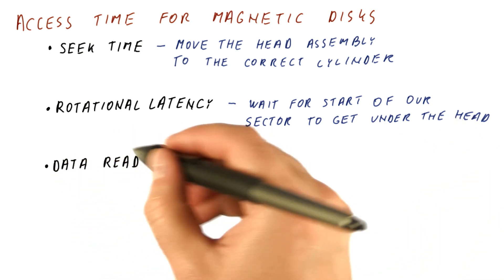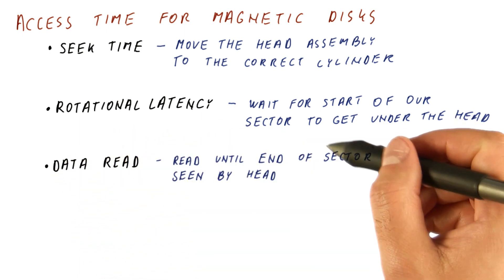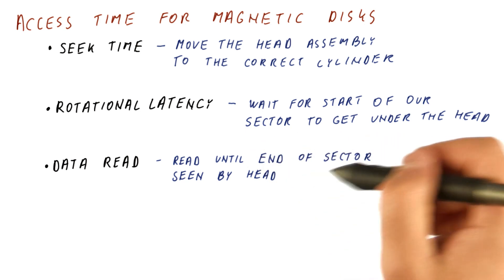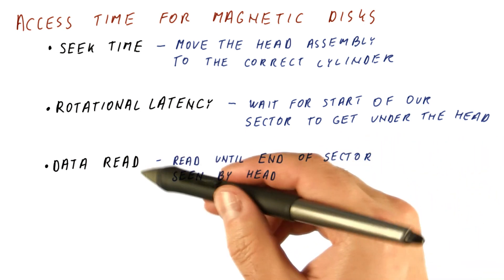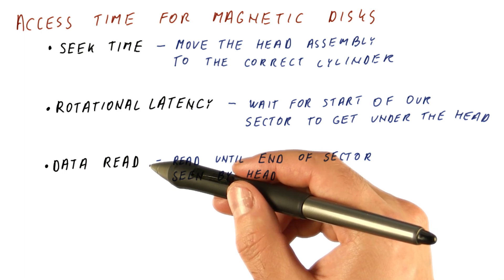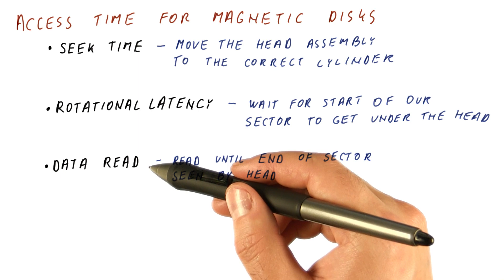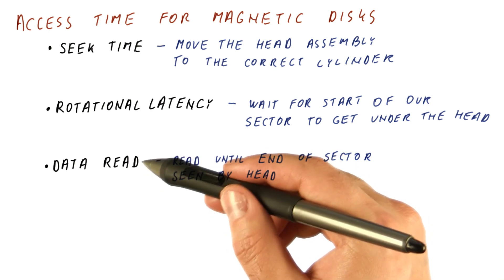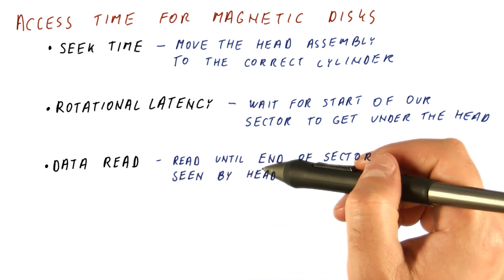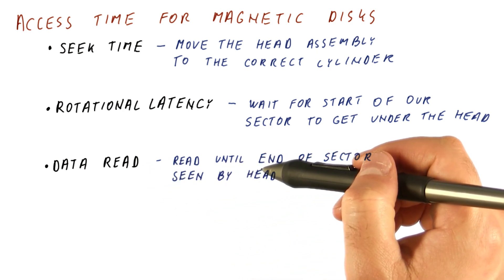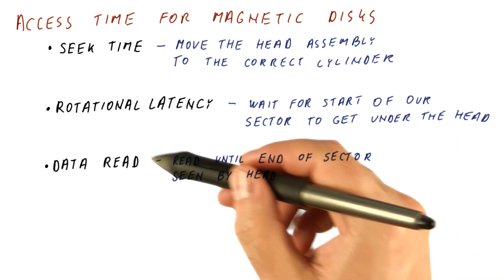Next, we have the data read, which is reading until the end of the sector is seen by the head. The data read really depends on how fast the disk is spinning and how many sectors we have per track. For example, if the whole track is just one sector, then the data read will be a whole rotation of the disk. If we have ten sectors per track, then the data read will be one-tenth of a rotation.